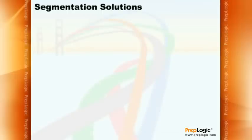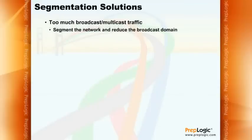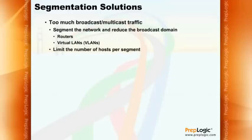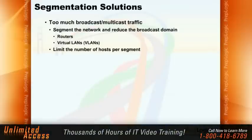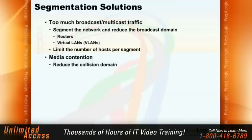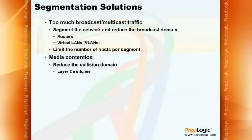It's important to look at the various segmentation solutions. If the problem is too much broadcast or multicast traffic, the general solution is to segment the network and reduce the broadcast domain by adding routing technology. We may also use VLANs, or Virtual Local Area Networks, to create separate broadcast domains, or simply limit the number of hosts on a single segment. If the problem is media contention, we need to reduce the collision domain, best achieved using a Layer 2 switch, a LAN switch, or a transparent bridge.